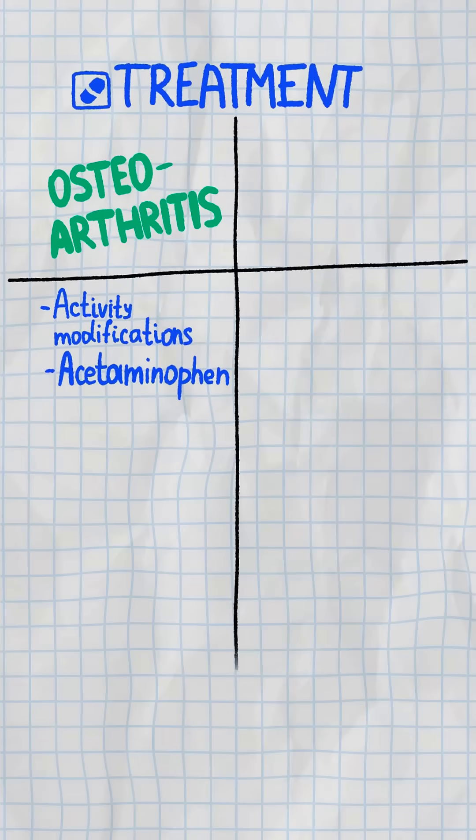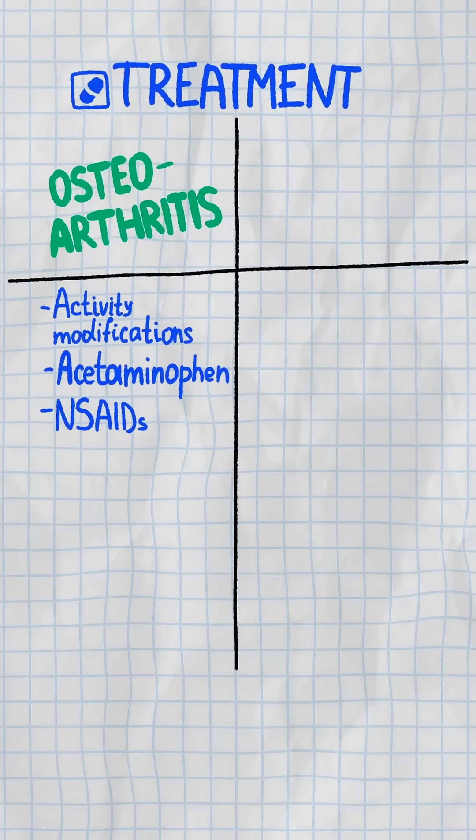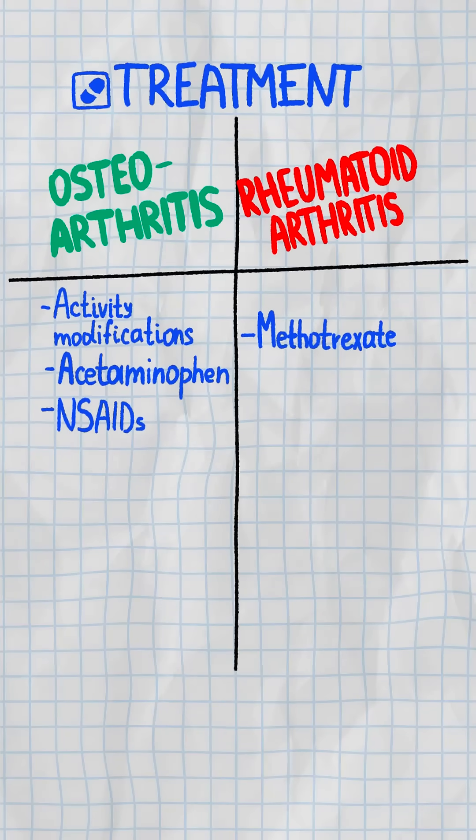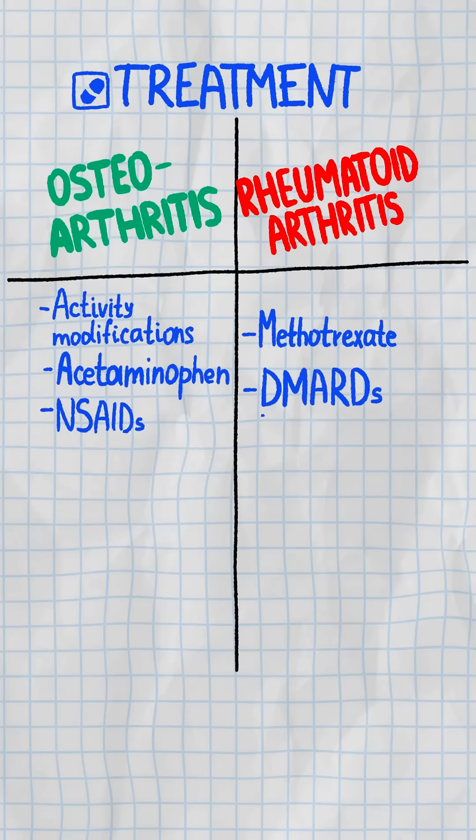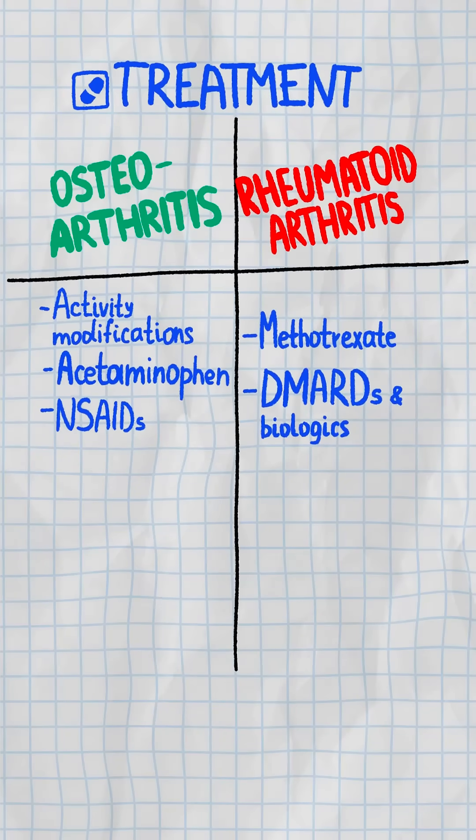Osteoarthritis equals acetaminophen and NSAIDs. Rheumatoid equals methotrexate, DMARDs, and biologics.